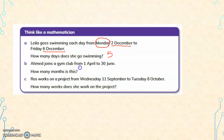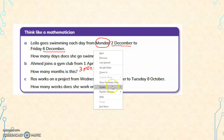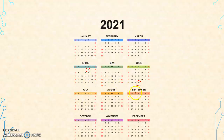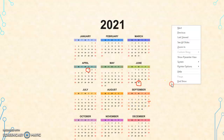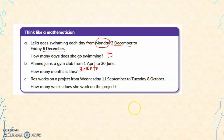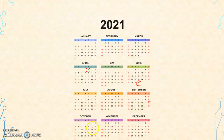It is a total of 3 months. Now similarly, Ross works on a project from Wednesday 11th September to Tuesday 8th October. How many weeks does she work on the project? Looking at the calendar from 11th September to 8th October.